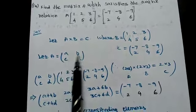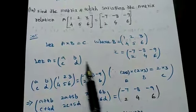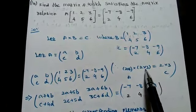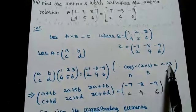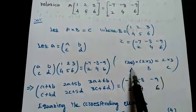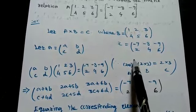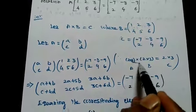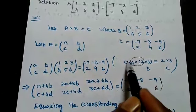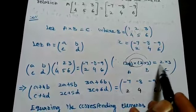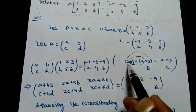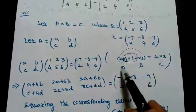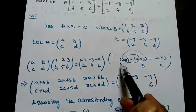Matrix A is 2×2 — I am assuming it has elements a, b, c, d. How do I conclude this? See here: the B matrix order is 2×3 (2 rows, 3 columns), and C is also 2×3. In matrix multiplication, the inner dimensions must cancel. So 2×2 multiplied by 2×3 gives 2×3, which matches C. That is the reason I am taking A as 2×2.